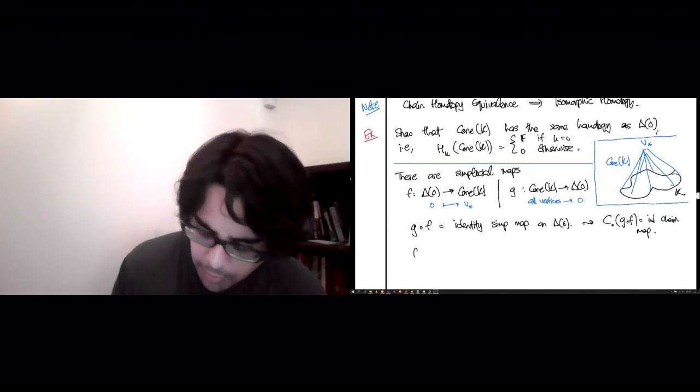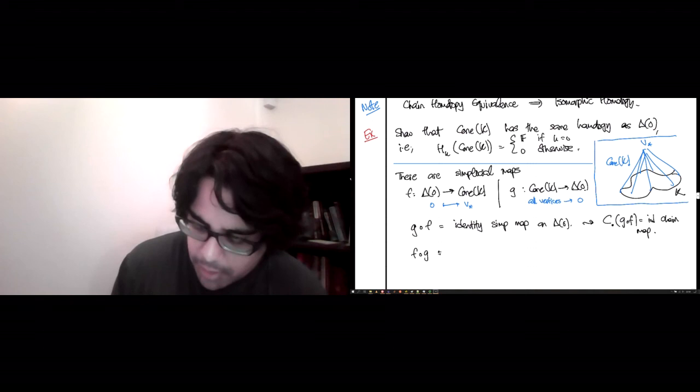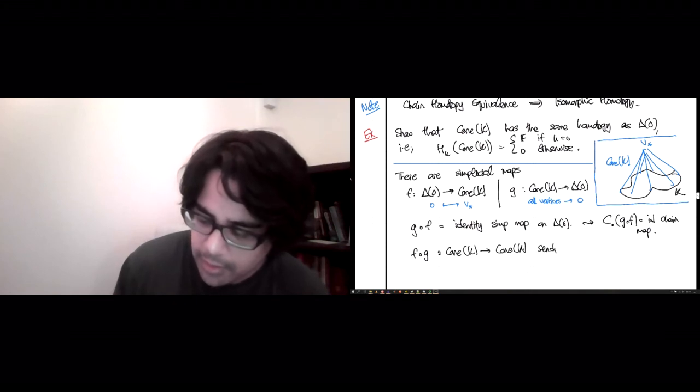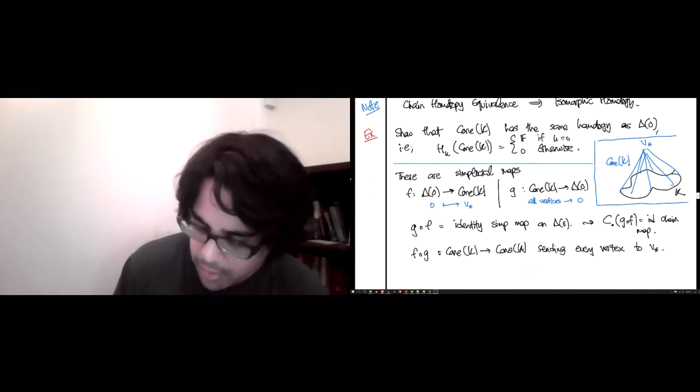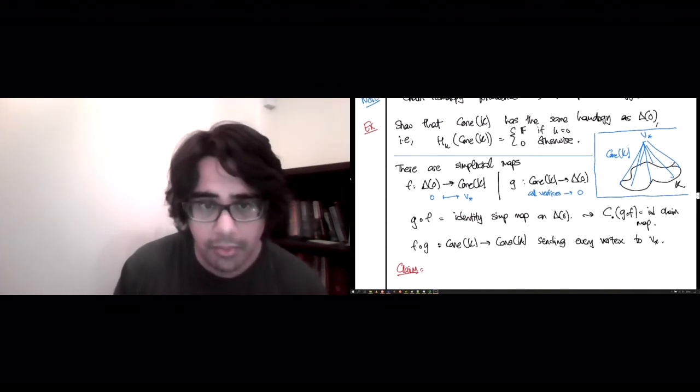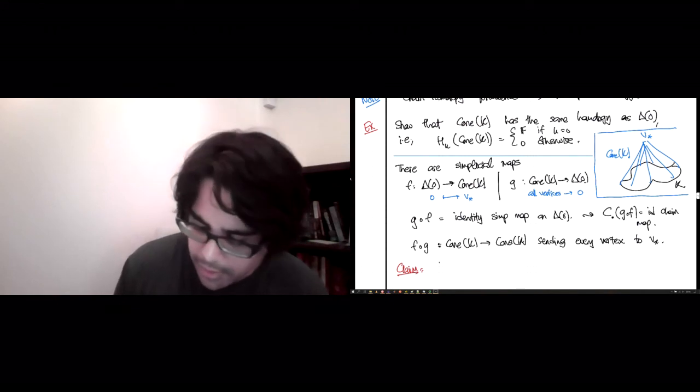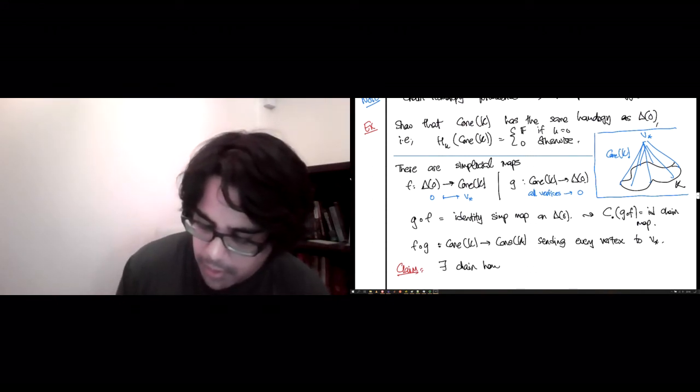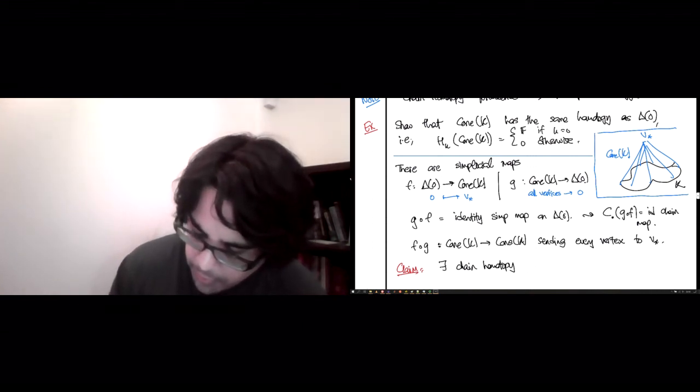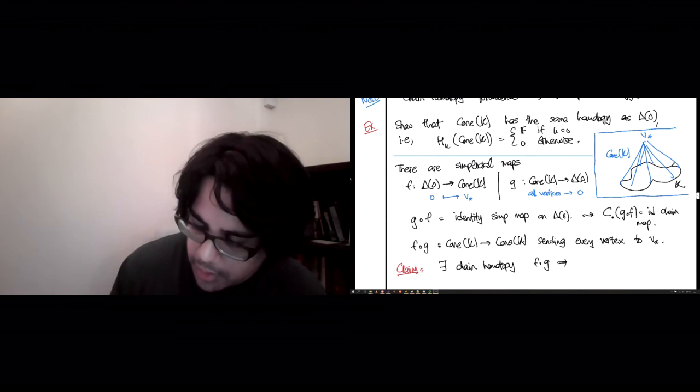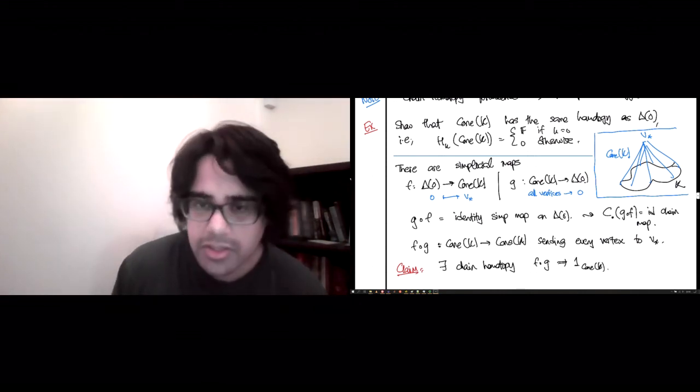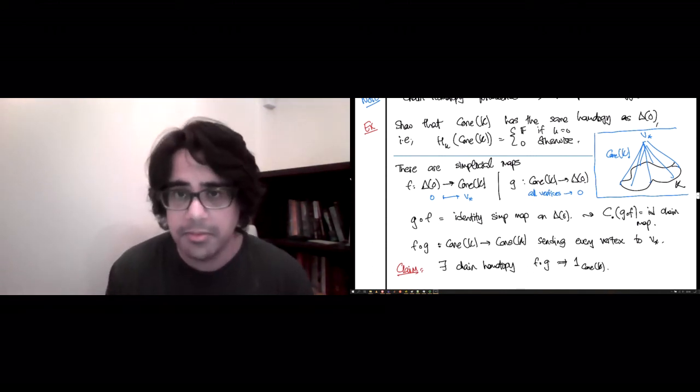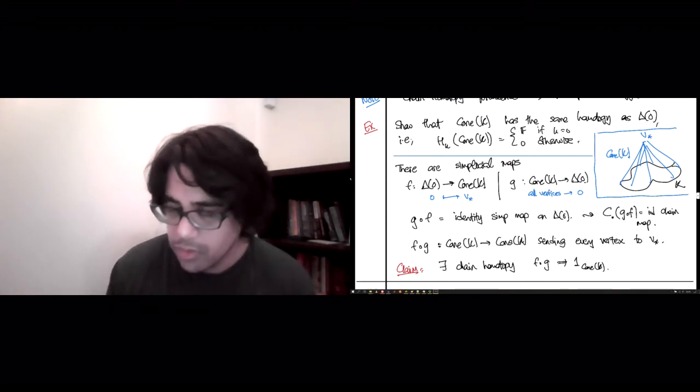Things are a little bit more complicated for f compose g. This is the map on cone K, from cone K to cone K, sending every vertex x to v*. And the claim, which is one of the exercises for this particular bit of material, is that there exists a chain homotopy relating this composite to the identity on cone K. And it's not so bad. One of the exercises in the notes, the homotopy is explicitly written out, and so you just have to check that it works. But anyway, that was everything about chain homotopy.